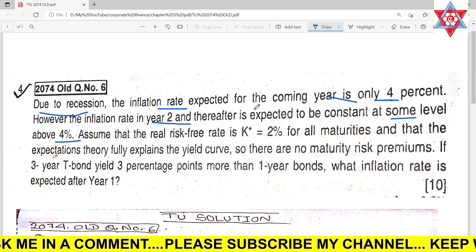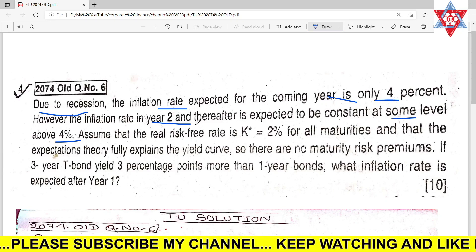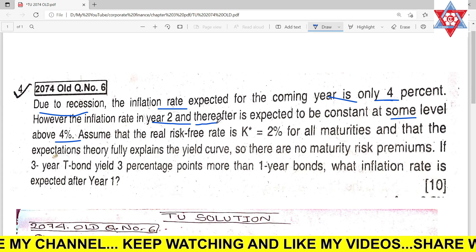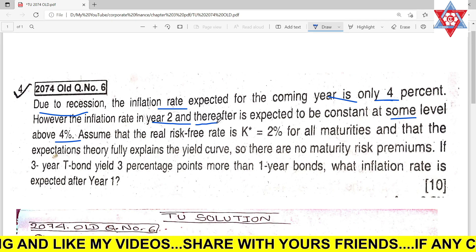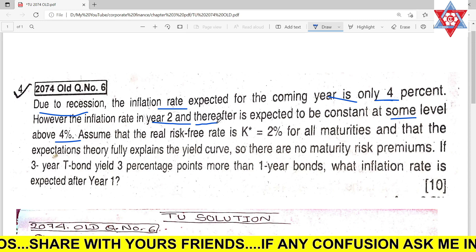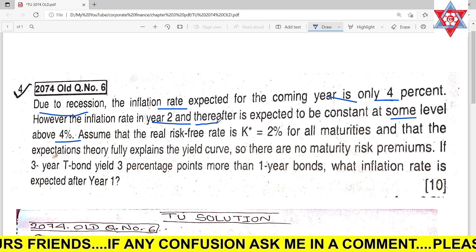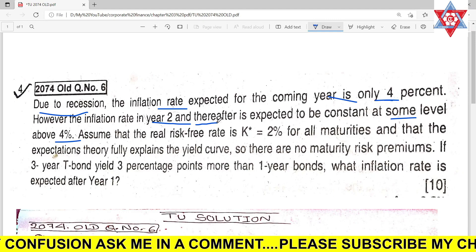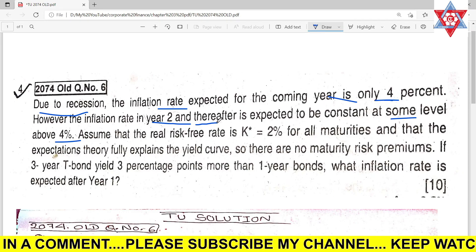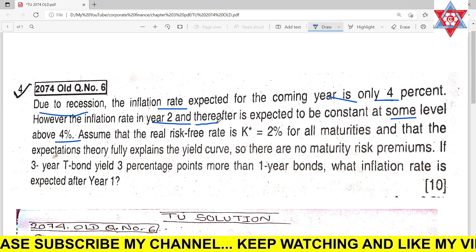Year two and thereafter is constant, but not the exact percentage. Assume that real risk-free rate is K* = 2% for all maturities.